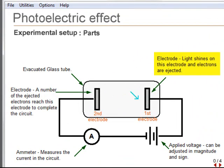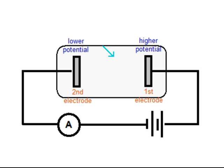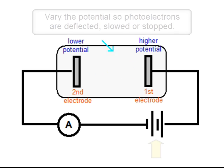Shown here are the parts of a photoelectric apparatus. Photons hit the surface of the first electrode, emitting a photoelectron. This is accelerated to the second electrode.